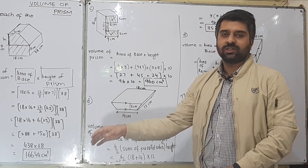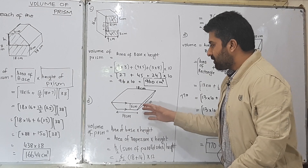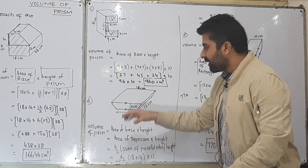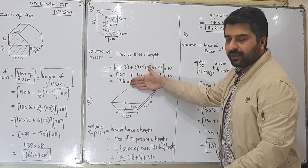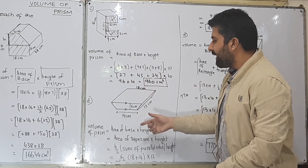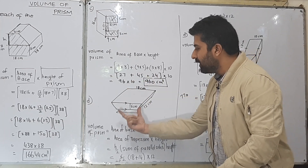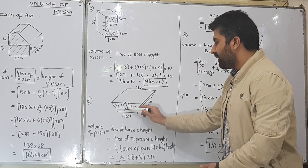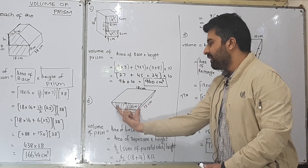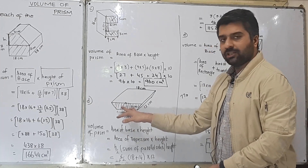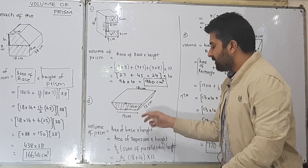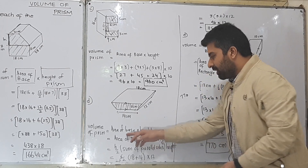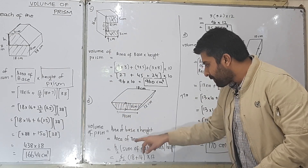Part D of question 1, exercise 14B. This is a prism — the front face is a trapezium, it travels all along the length, and the front end and back end are identical. The cross section at any point is exactly the same. This is the base. The height of the prism is the distance between the front base and the end one, which is 12.